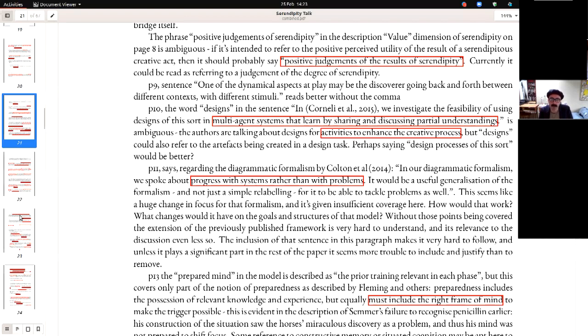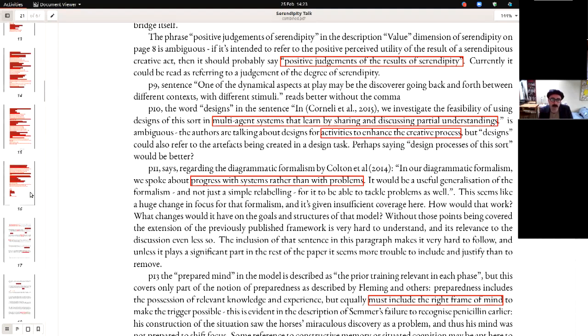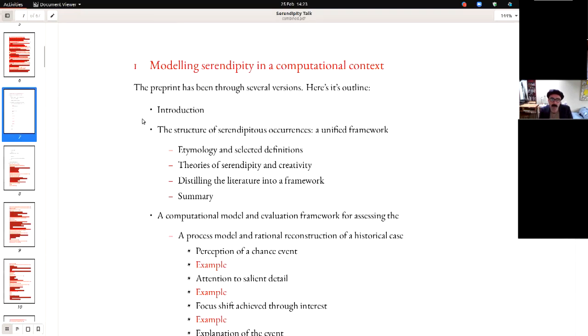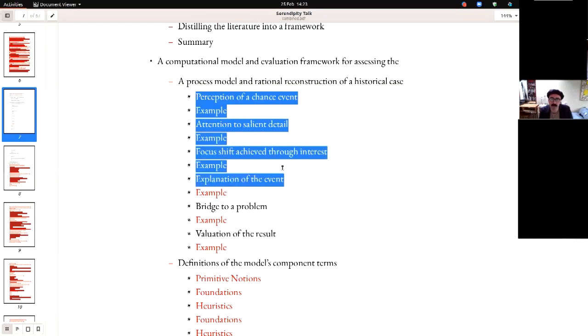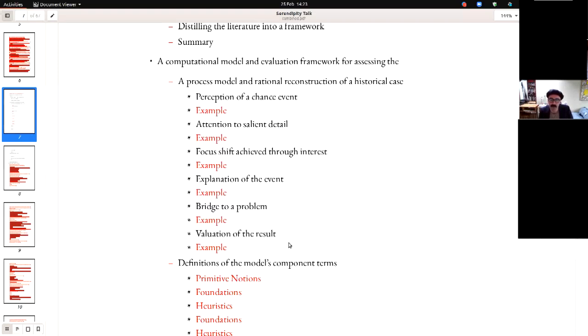So to kind of sum that up, especially because I'm running low on time, one of the things that I think is a real flaw is this notion of a process model. Here you can see here that the process model is kind of perception of a chance event, attention to salient detail, focus shift achieved through interest, explanation of the event and then bridging to a problem and valuation of the result. And there's nothing wrong with this per se, as a description of a kind of process. But the first flaw, which I think should come to mind, given what I just said in the first part of this talk, is that this isn't a loop really. I mean, yes, you get a result out at the end, but it really is just a linear process. You start here with an event and you get out a result.